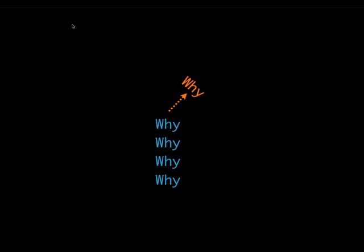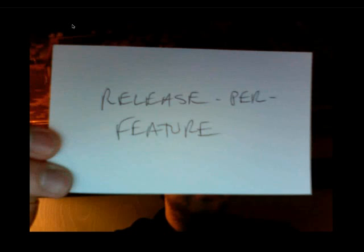The best way to start understanding what the buzz is all about is to start popping the why stack and start asking why. The main thing about Lean and the Lean approach to software development is release per feature — namely, when we finish a feature, we want the ability to release that to market. We want to get ROI as soon as possible. Return on investment is a function of time, so if we can get an idea, a concept to cash quicker, we're going to have a better ROI.